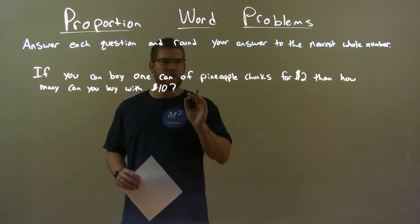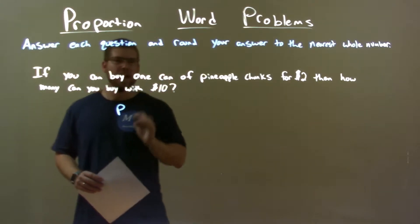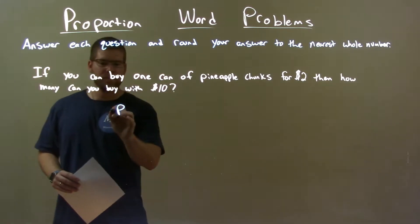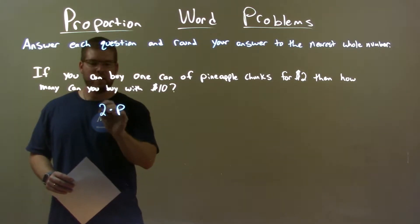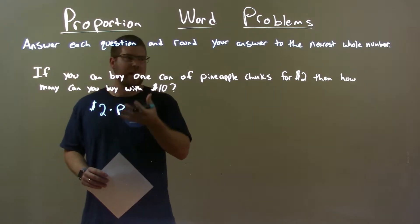So the number of pineapple chunks we can buy, let's write that as P. And we know it's $2 per chunk, so if we have $2 out in front here, $2 per one pineapple chunk.